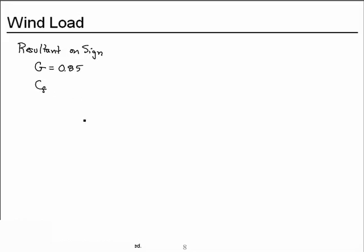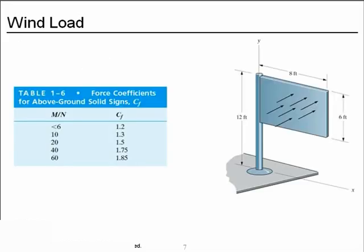We need CF, which we'll get from table 1-6 from our text. CF is a modifier based on the aspect ratio of the sign. Notice, if the height from the ground to the bottom of the sign is less than 1 quarter of the height of the sign.